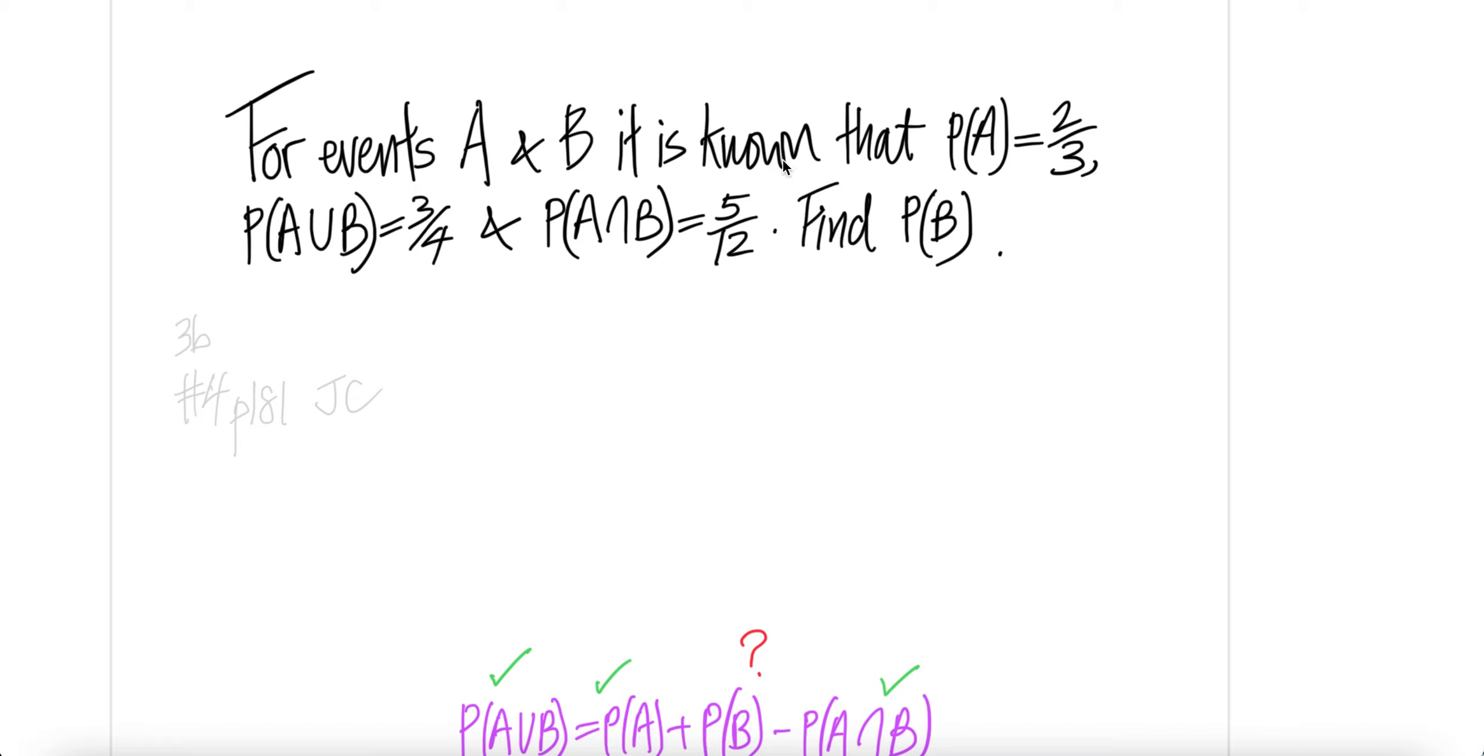For events A and B, it is known that P(A) is two-thirds, P(A union B) is three-quarters, and P(A intersect B) is equal to 5 over 12. Find the probability of B.